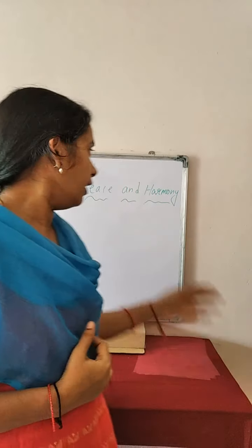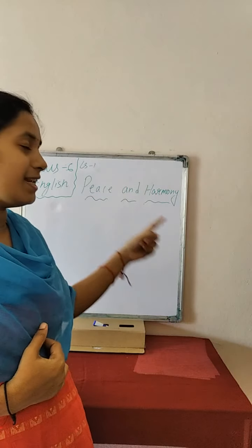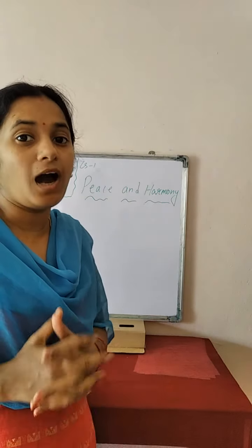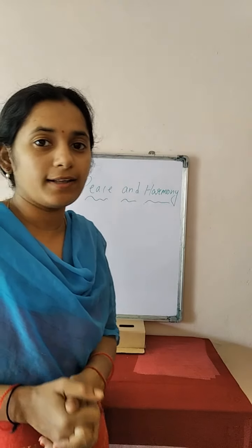Good morning children. Hope you all are fine. From today we will start our English lessons. We have 8 units and each unit has 3 readings. Today we will discuss the first reading A of unit 1. The first lesson is Peace and Harmony. Let's start the lesson.